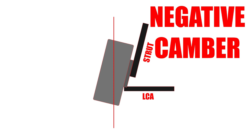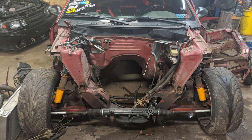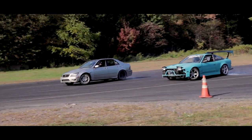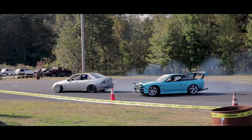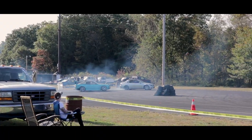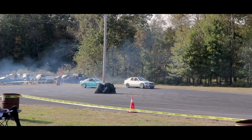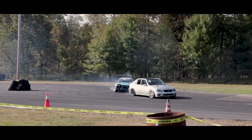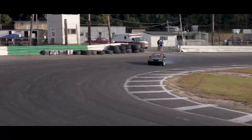Drifting requires a good bit of negative camber in the front. On my own car, I had negative four and a half degrees of camber so that when I was at full lock, my outside tire was straight up and down. This can be achieved with caster camber plates or your coilovers' stock upper hats, which mainly have camber adjustment.